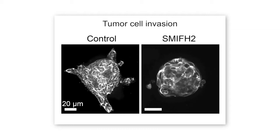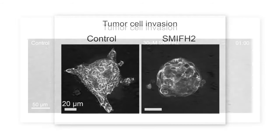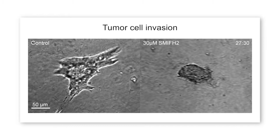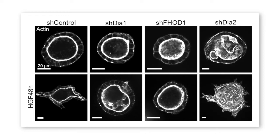in the presence of the formin inhibitor, the cells could not leave and invade the surrounding collagen or matrigel matrix. It didn't affect the stability of the epithelial tissue itself, but it affected morphogenetic processes that involve cell migration away from the mass.